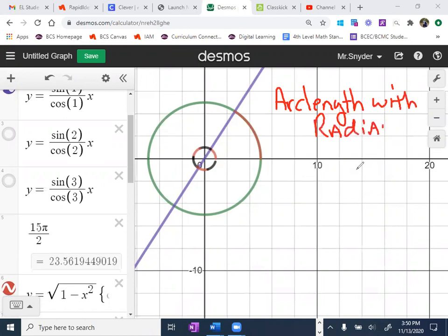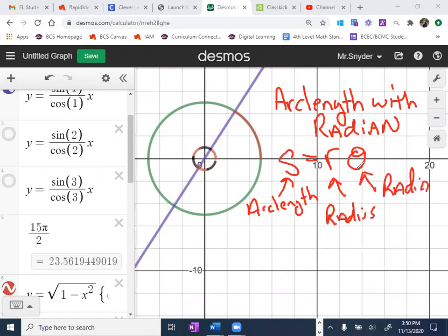There's a nice easy formula for that, and that is simply S equals R times theta. This just stands for arc length, R equals the radius, and theta equals the radians. So we just have to multiply the radius times the radians.